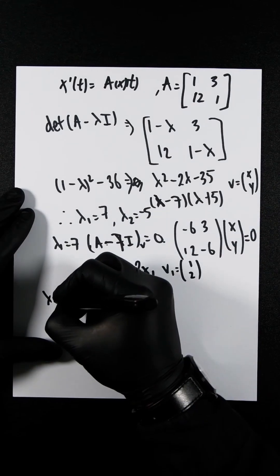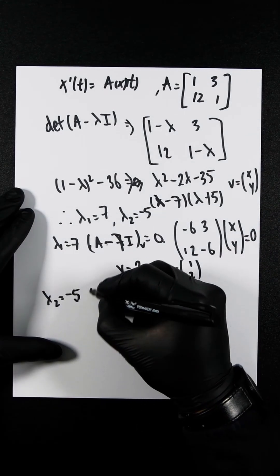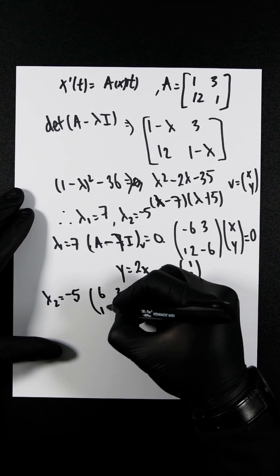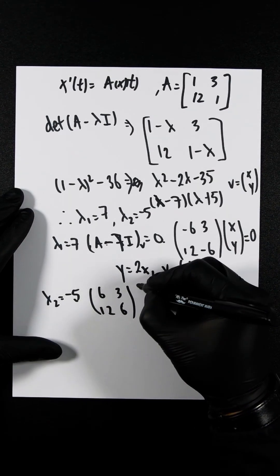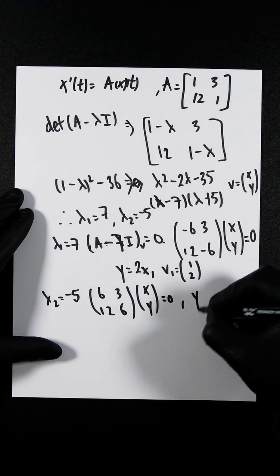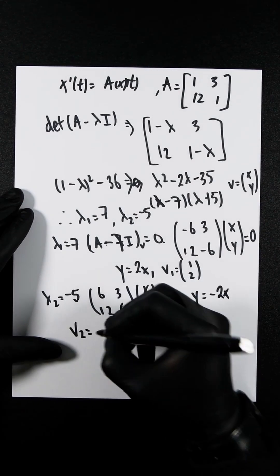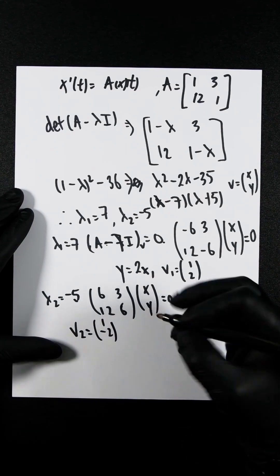Let's do the same for lambda 2 equals minus 5. We get the matrix [6, 3; 12, 6] times [x; y] equals 0. Expanding that out, y equals minus 2x, so V2 is [1, -2].